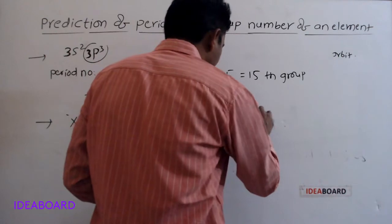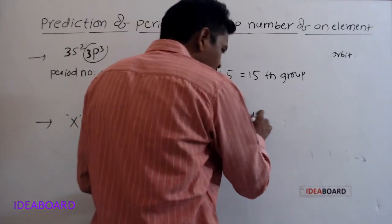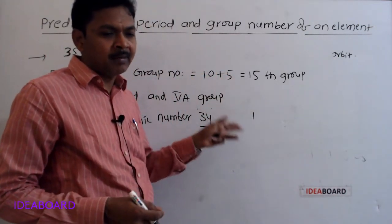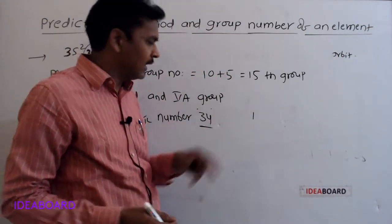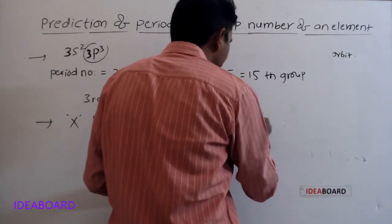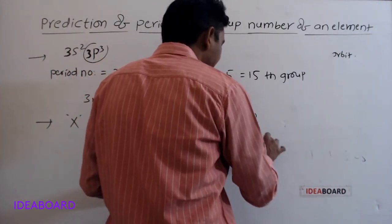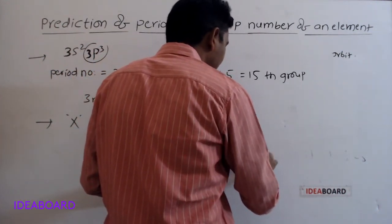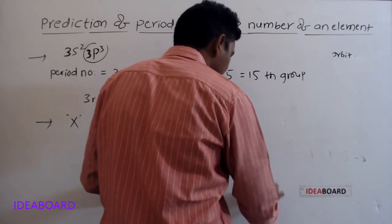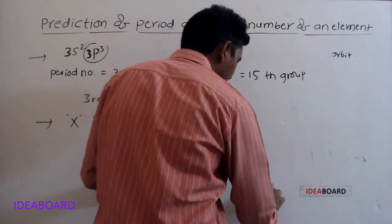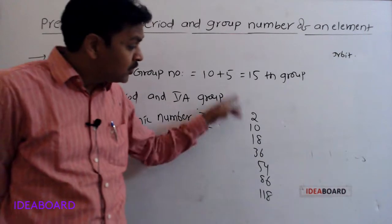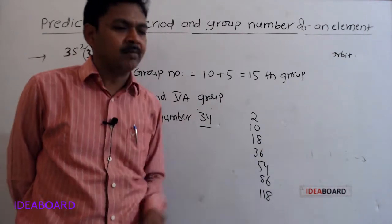We know that the zero group elements are helium, neon, argon, krypton, xenon, radon, and oganesson, with atomic numbers 2, 10, 18, 36, 54, 86, and 118 respectively. These are the zero group element atomic numbers.